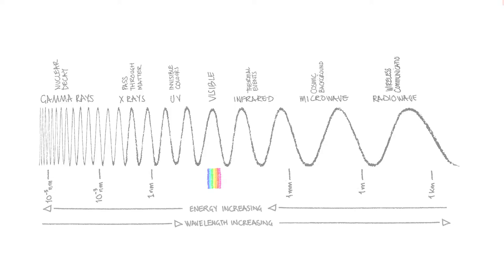Today we're talking about all the light in the universe, most of which is invisible. But today we're going to be talking about the visible light, the visible spectrum. It's electromagnetic radiation like X-rays, gamma rays, UV, infrared, microwaves, and radio waves — but this is the part that is actually visible to our retina.